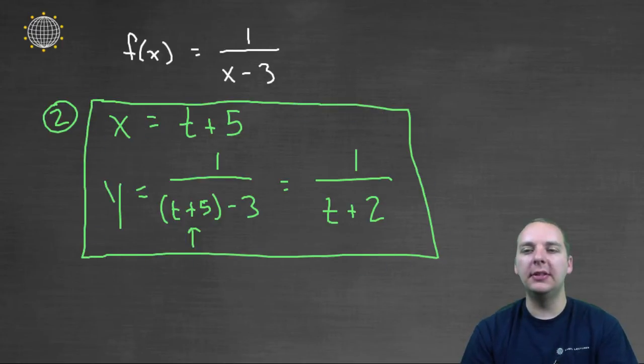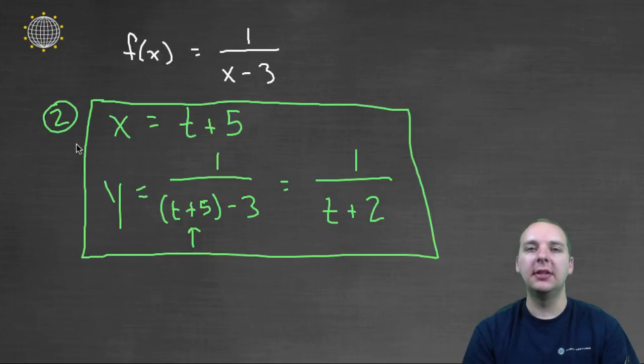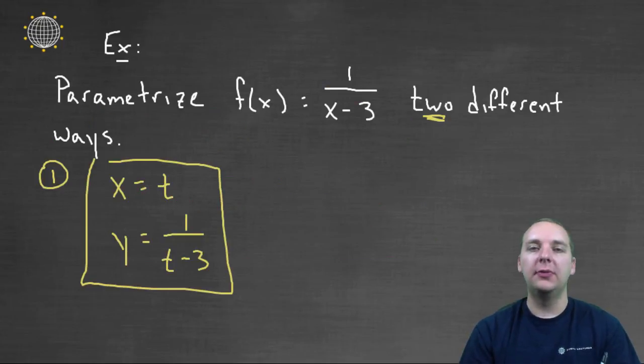There are some differences in these guys' graphs, the first parametrization versus the second parametrization, such as where it is along the curve at a given time. But as far as the shape of the graph, there's no difference. But as far as point to point, there might be.